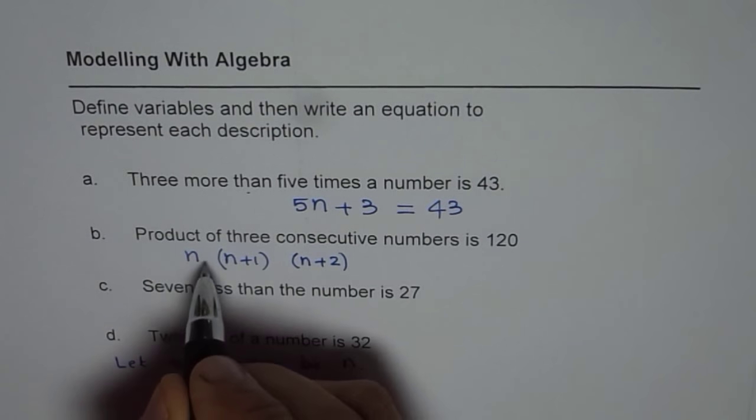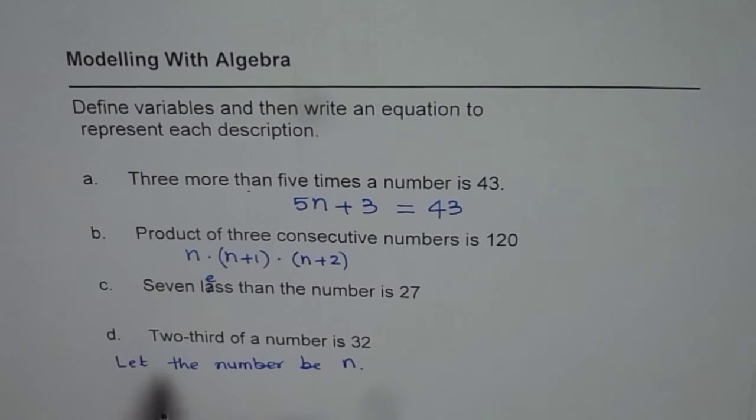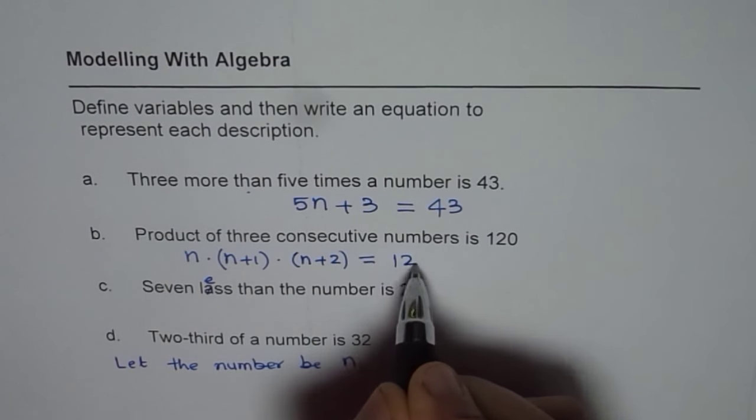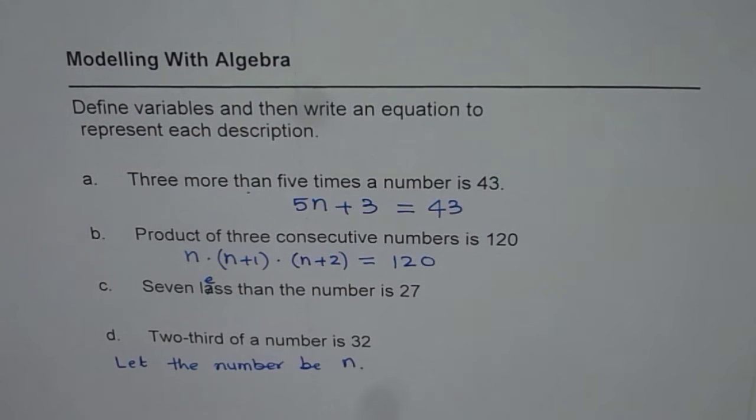Product of 3 consecutive numbers means multiply them. Product of 3 consecutive numbers is equal to 120. So that is how you can form an equation from the given statement.